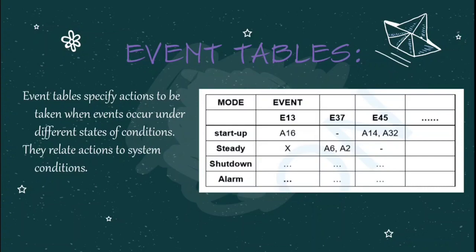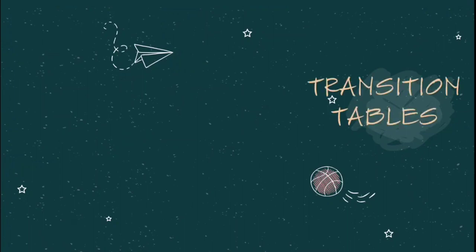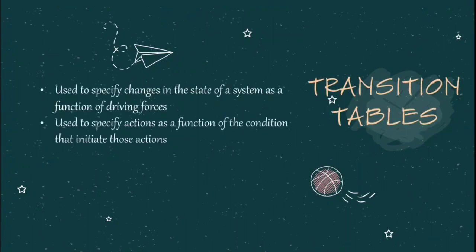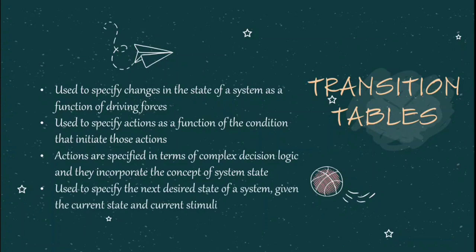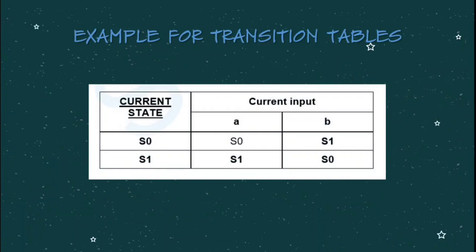Next, let's see about transition tables. Transition tables are used to specify changes in the state of a system as a function of driving forces. It specifies the changes in the state of a system as a function of the next state. The specified table illustrates the format of a simple transition table — given current state S1 and the current input B, the system will go to the next state S0. Transition diagrams are an alternative representation of transition tables, and both are representations of finite state automata.